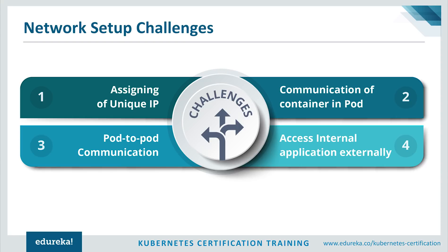You can solve these challenges by assigning a unique IP address to each pod using the Container Network Interface (CNI). The container runtime offloads IP assignment to the CNI, which connects to underlying configured plugins like bridge or overlay networks to get IP addresses, then forwards the IP back to the requesting container runtime. For container-to-container communication inside a pod, all container runtimes create an isolated network namespace for each container on Linux. These namespaces can be shared across containers or with the host OS, so inside a pod containers share network namespaces and can reach each other via localhost.